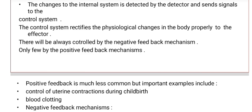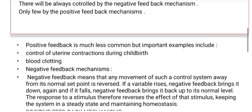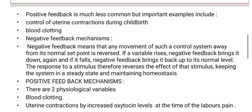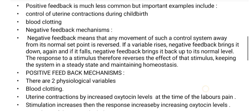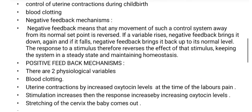The body is mostly controlled by the negative feedback mechanism, while only a few processes are done by the positive feedback mechanism. Positive feedback is much less common but still important. Examples of positive feedback include control of uterine contractions during childbirth and blood clotting.